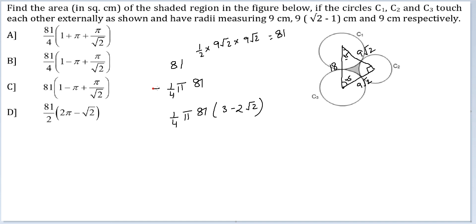So our final answer is 81 minus this. What I can do is get 4 common everywhere. So this will turn into 364. I have 364 minus 81 pi minus 243 pi minus 162 root 2, whole thing divided by 4.